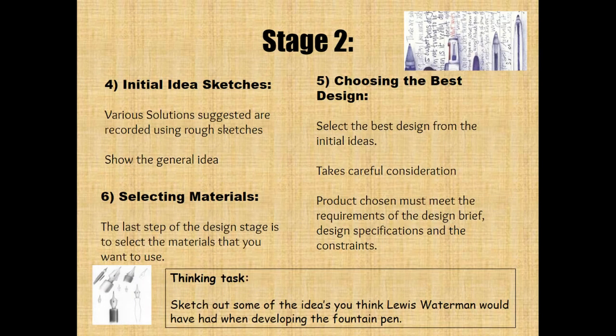Stage two, steps four, five, and six. Step four is initial idea sketches — you'll have various solutions suggested, recorded using rough sketches that show the general idea. Step five is choosing the best design — you're selecting the best design from the initial ideas, taking careful consideration that the product chosen must meet the requirements of the design brief, design specifications, and constraints.